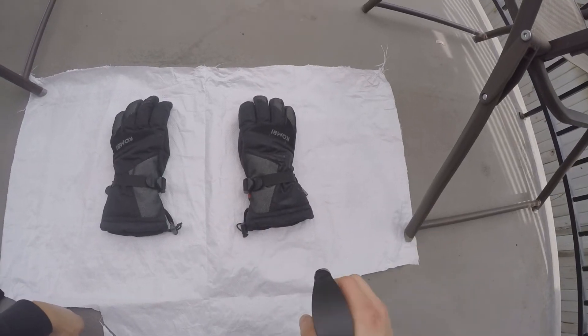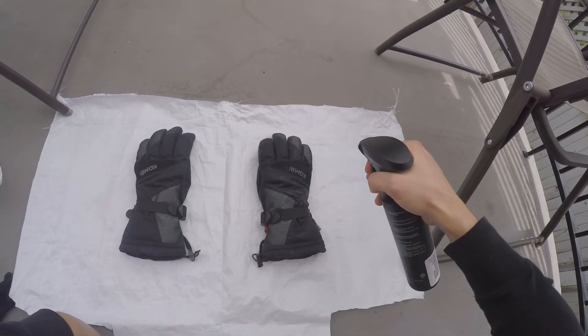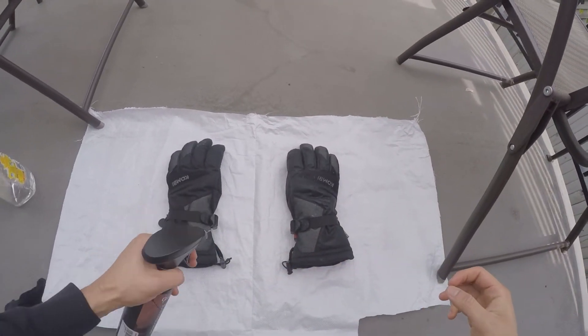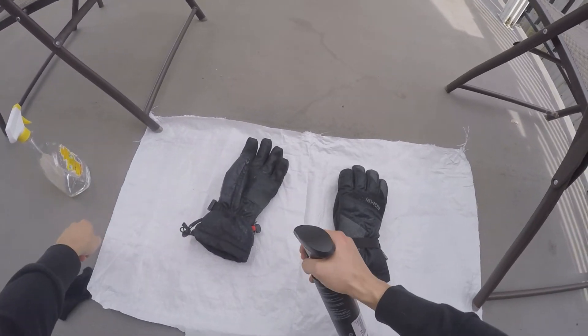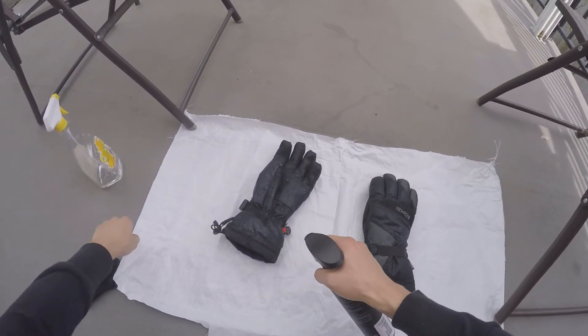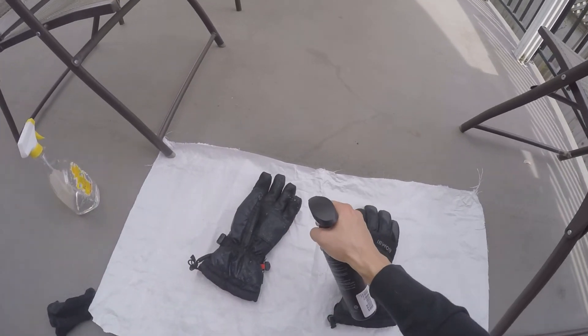You'll want to spray from a distance of about 15 cm to coat all surfaces equally. It is important to use long presses on the spray lever so that you get a fine mist and better coverage.